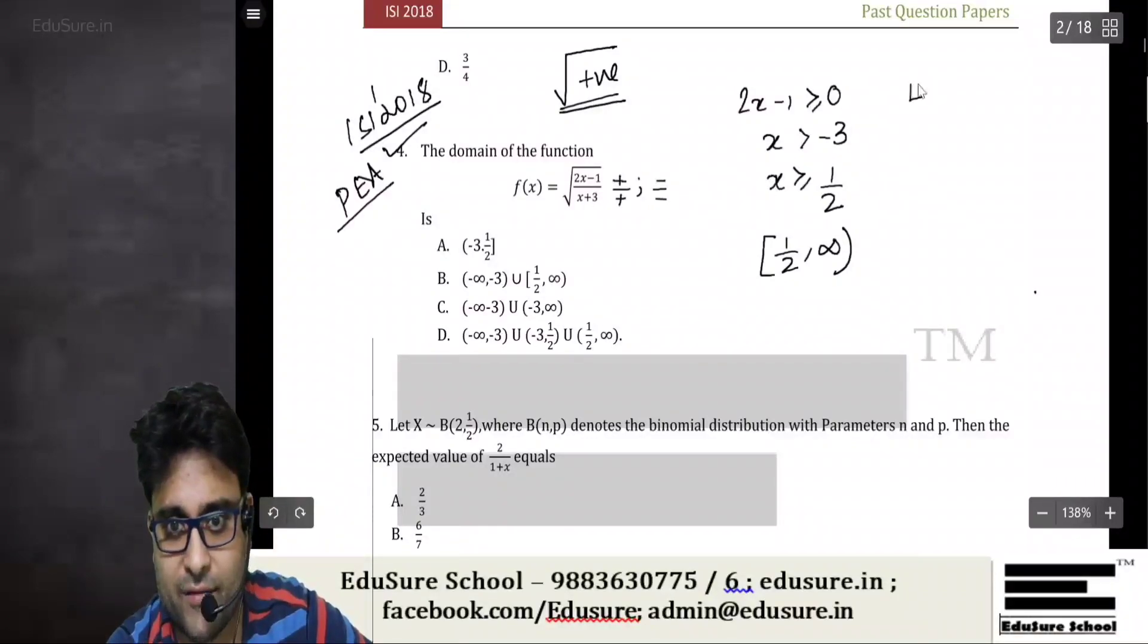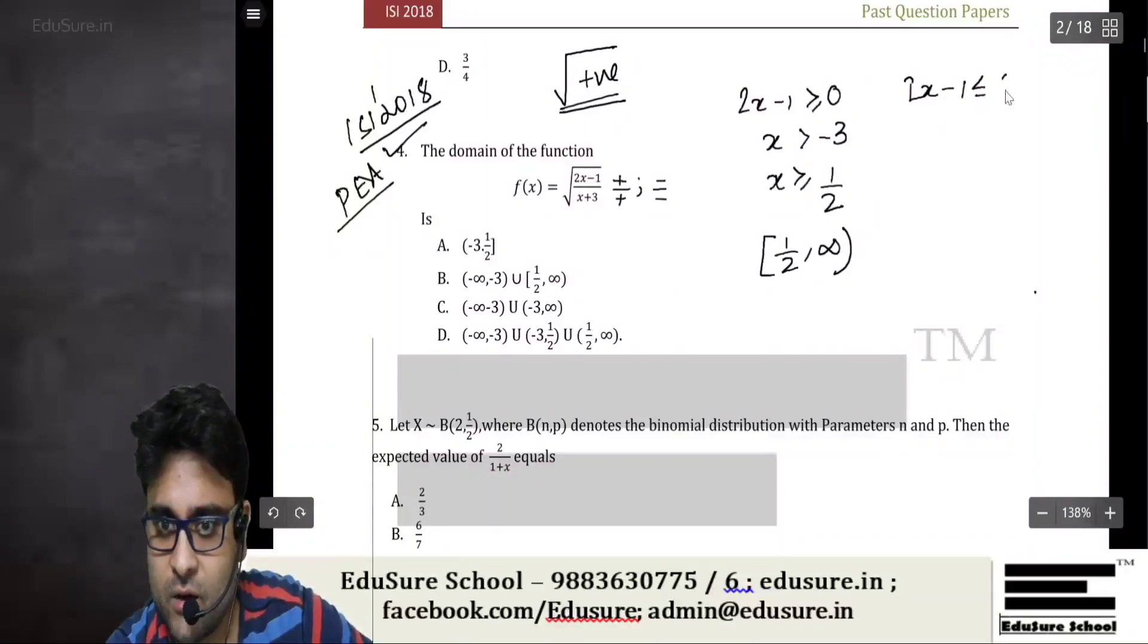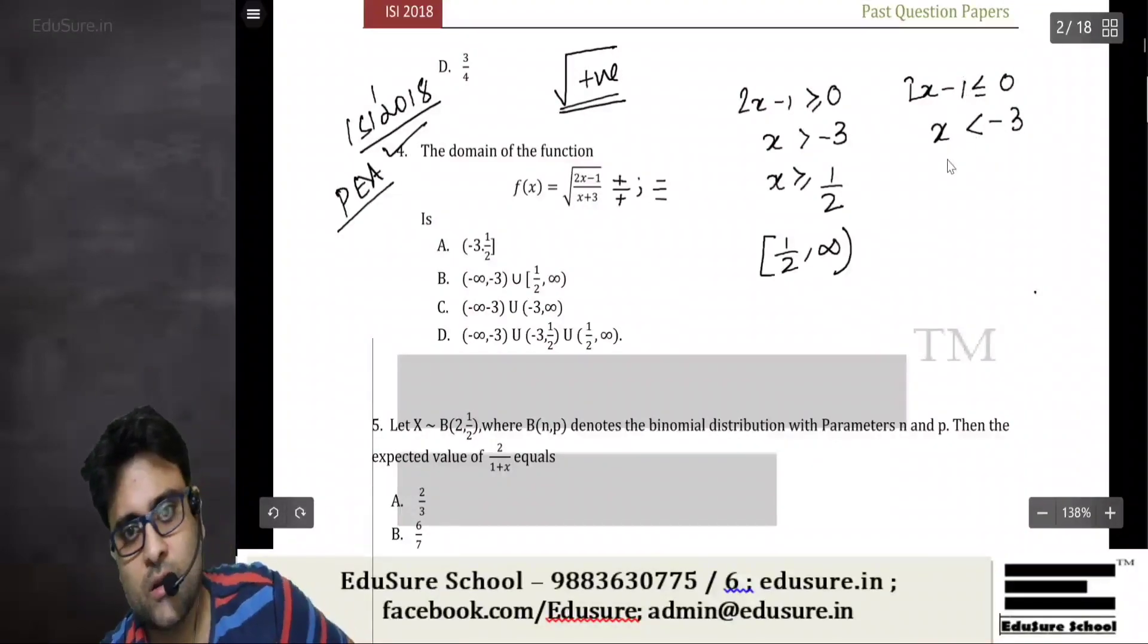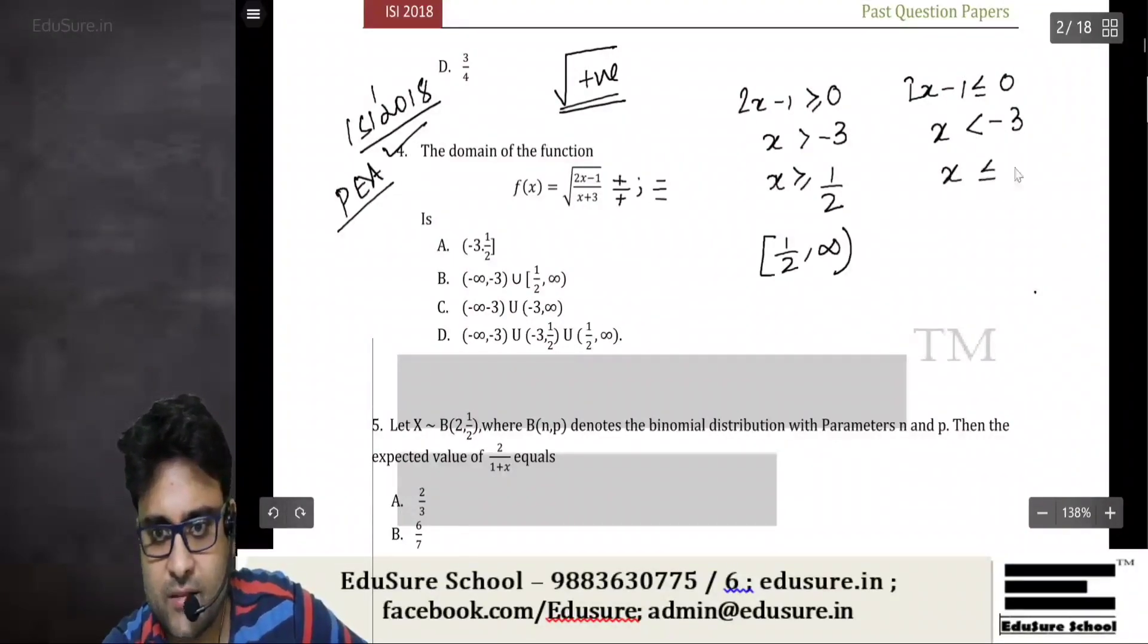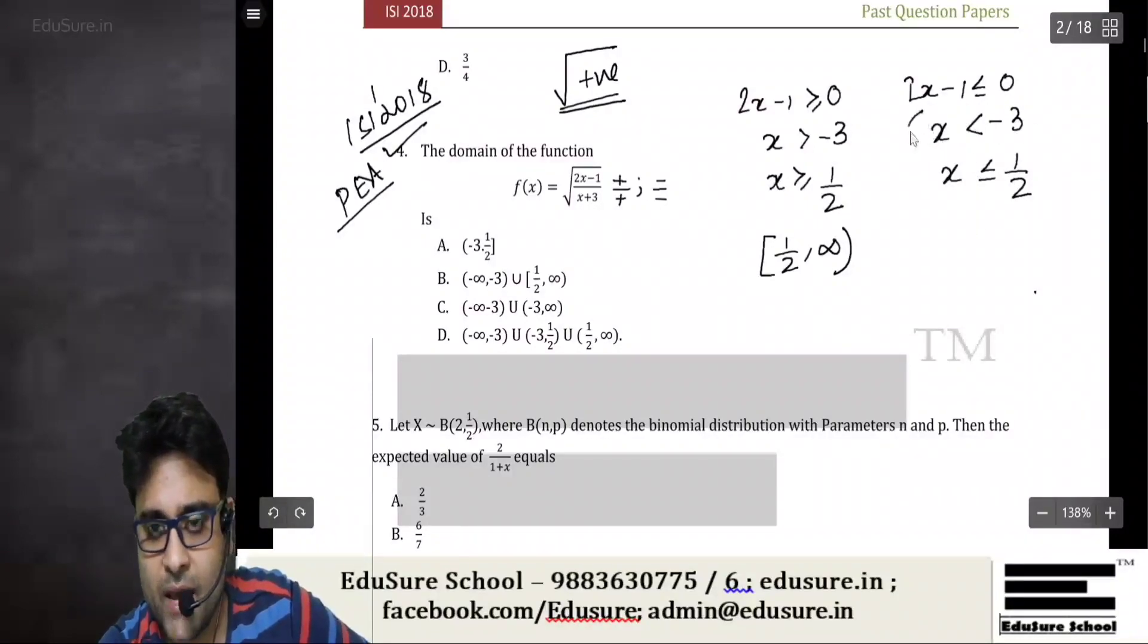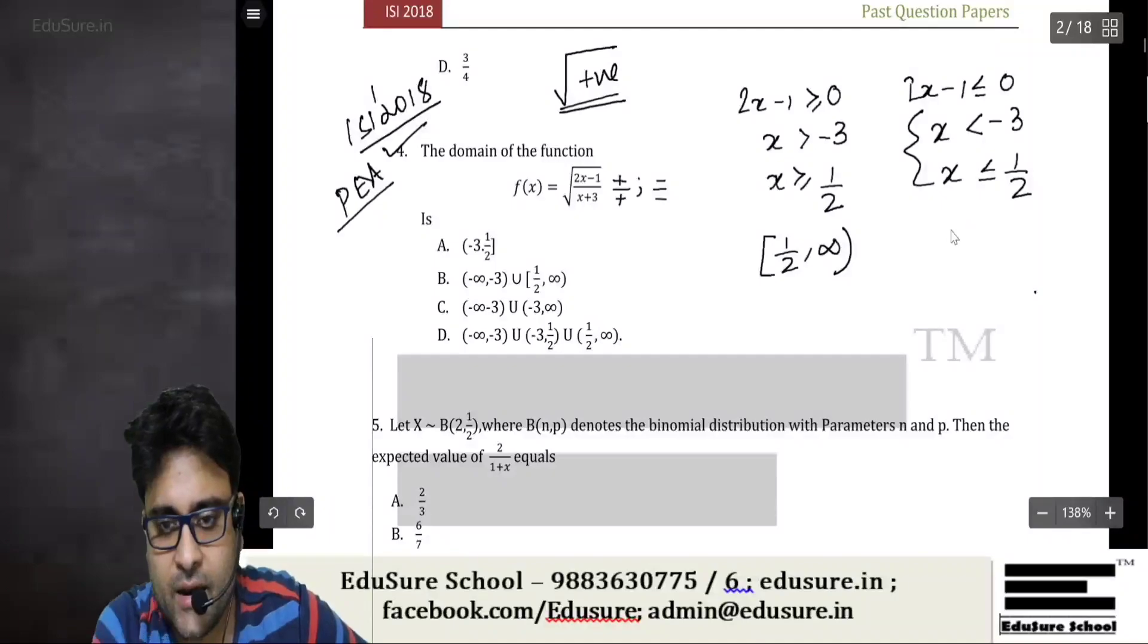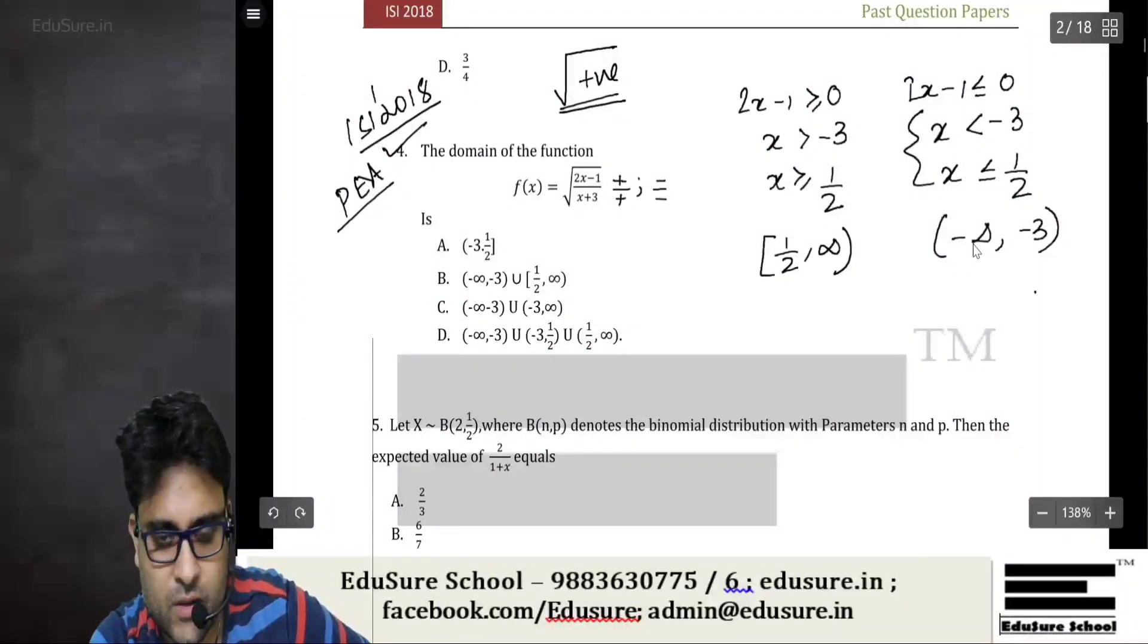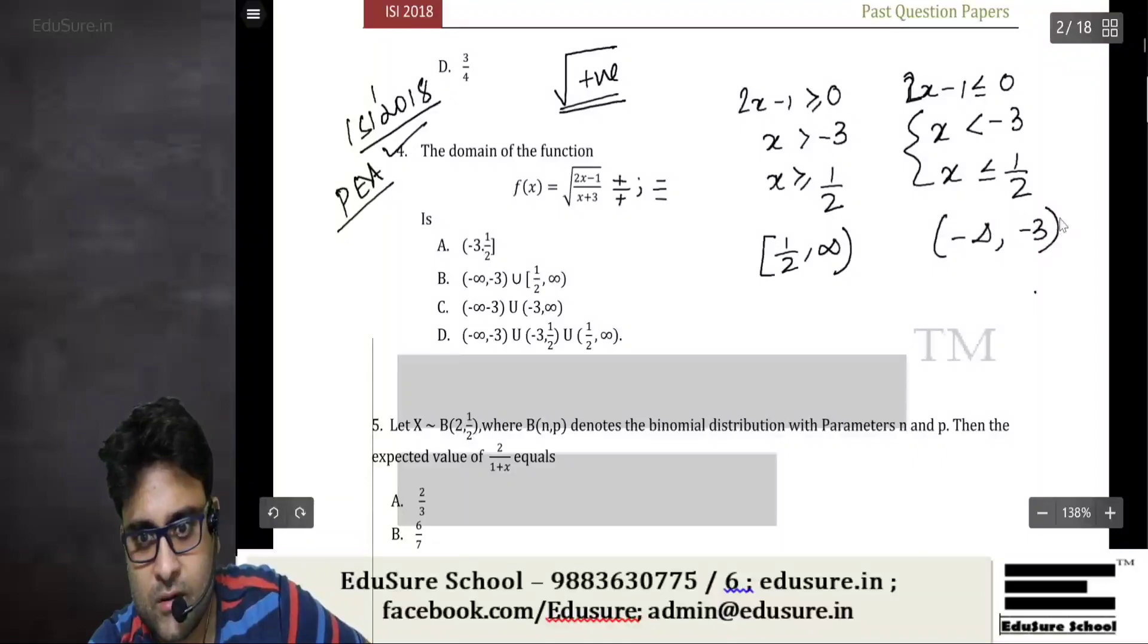Now both will be negative if 2x-1 ≤ 0 and x < -3. This will give us x ≤ 1/2 and x < -3. If I combine these two, I'll get (-∞, -3).